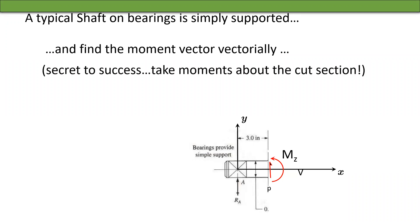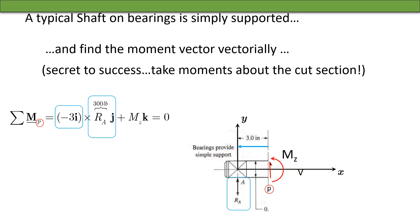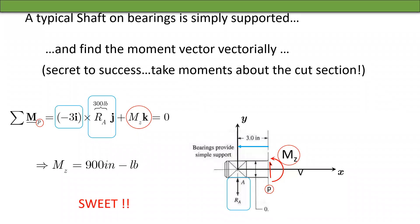The key is to take moments around the cut section point P. The blue star tells you which arm and which force to use. Ra times 3 plus Mz times k equals zero, so Mz — the moment around the z-axis — is 900 inch-pounds. Done.